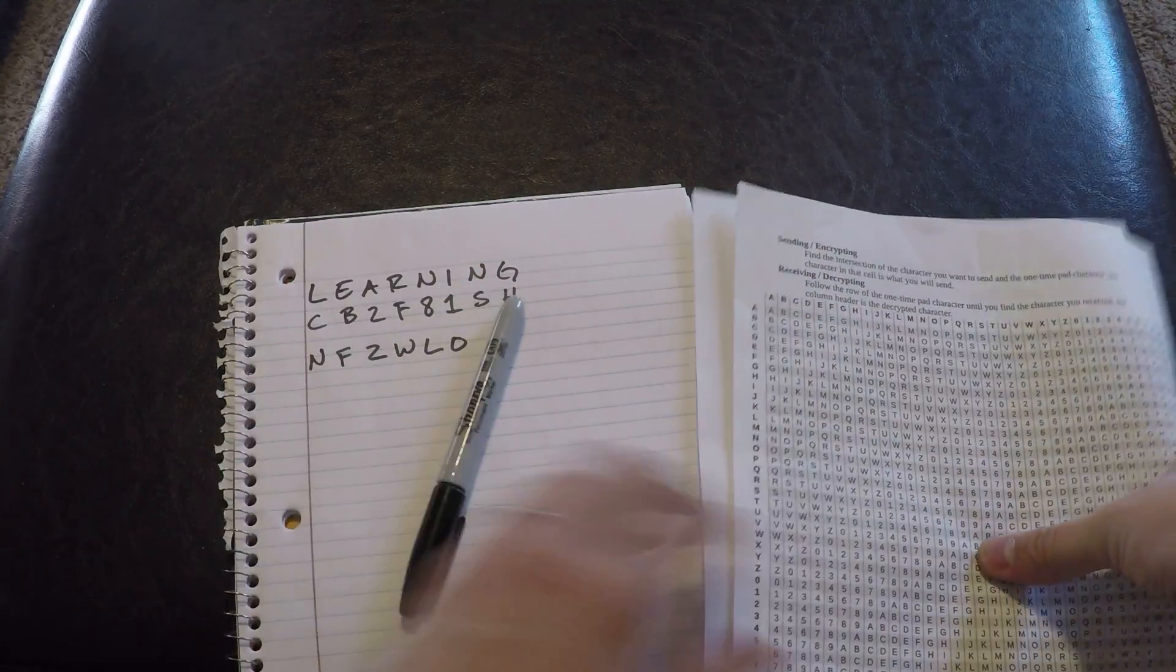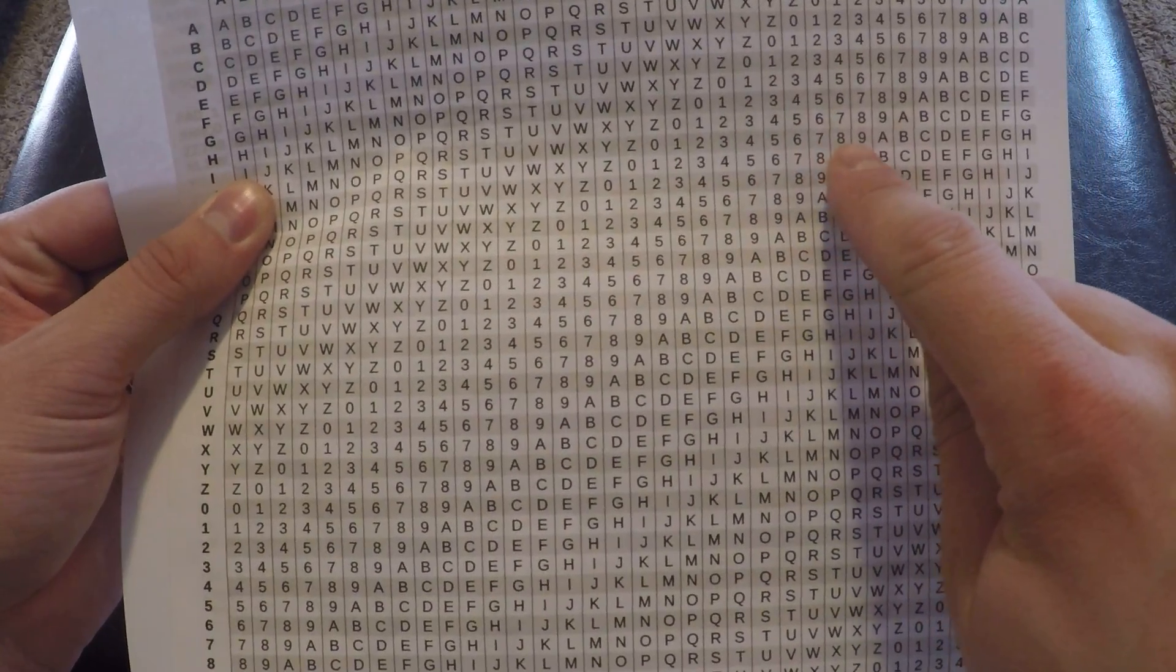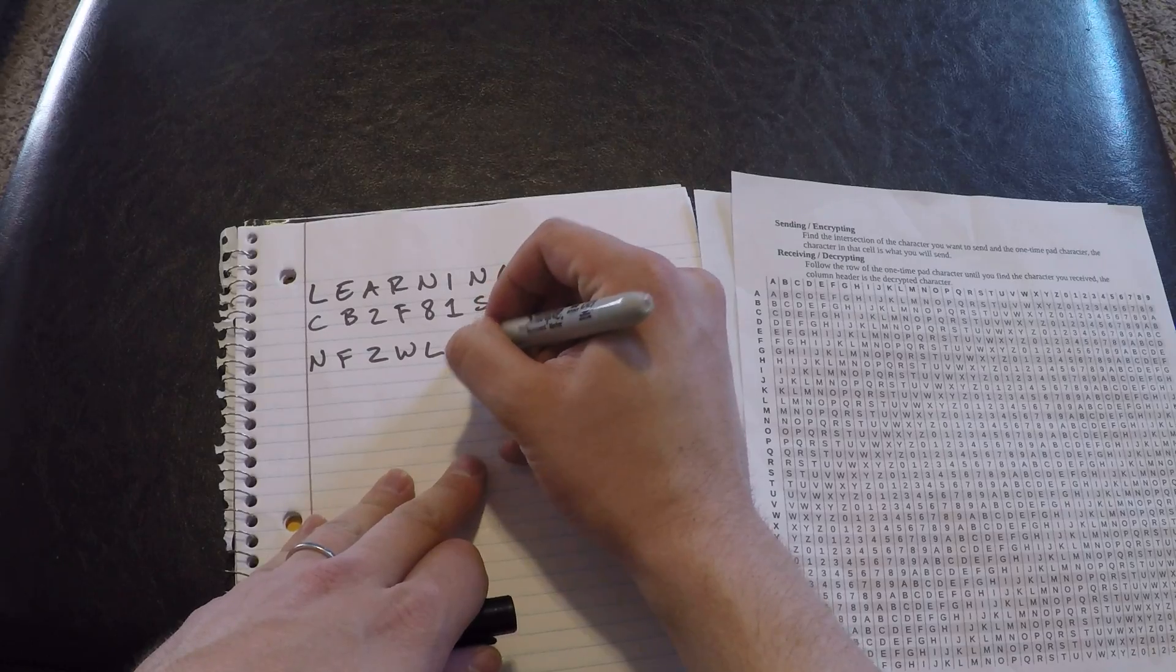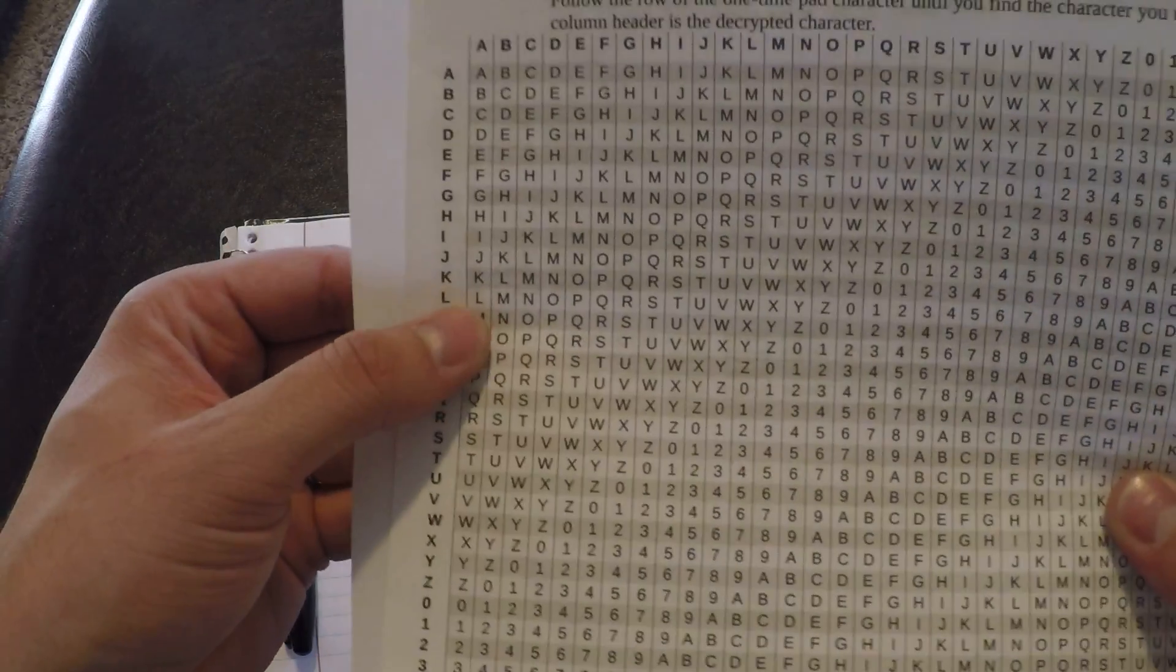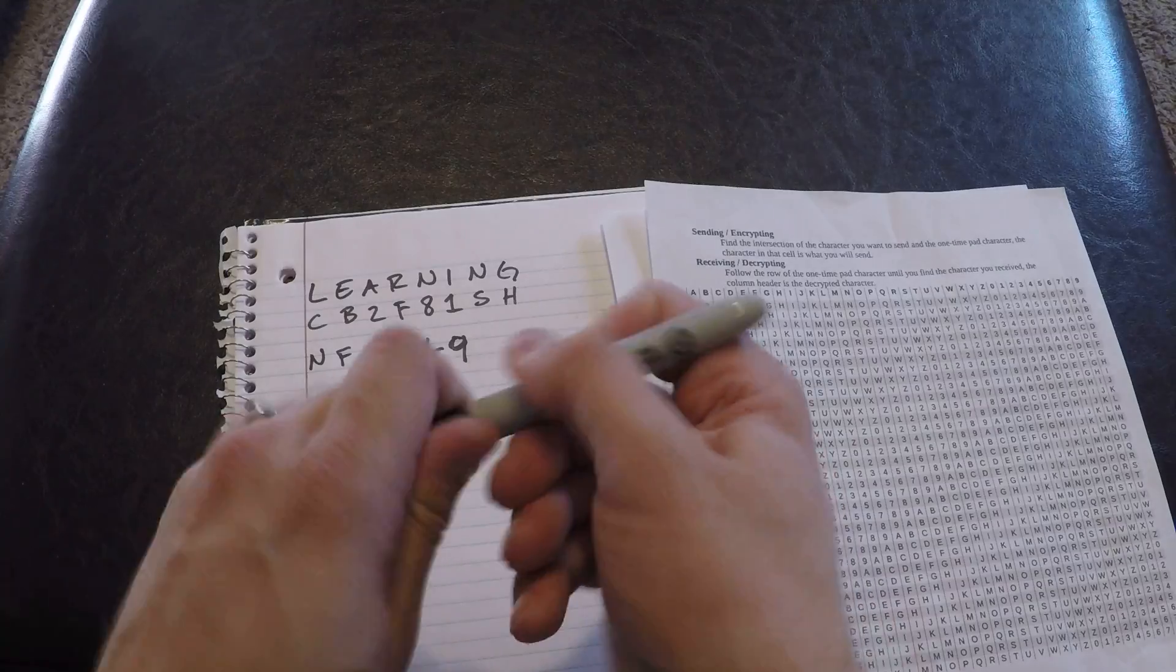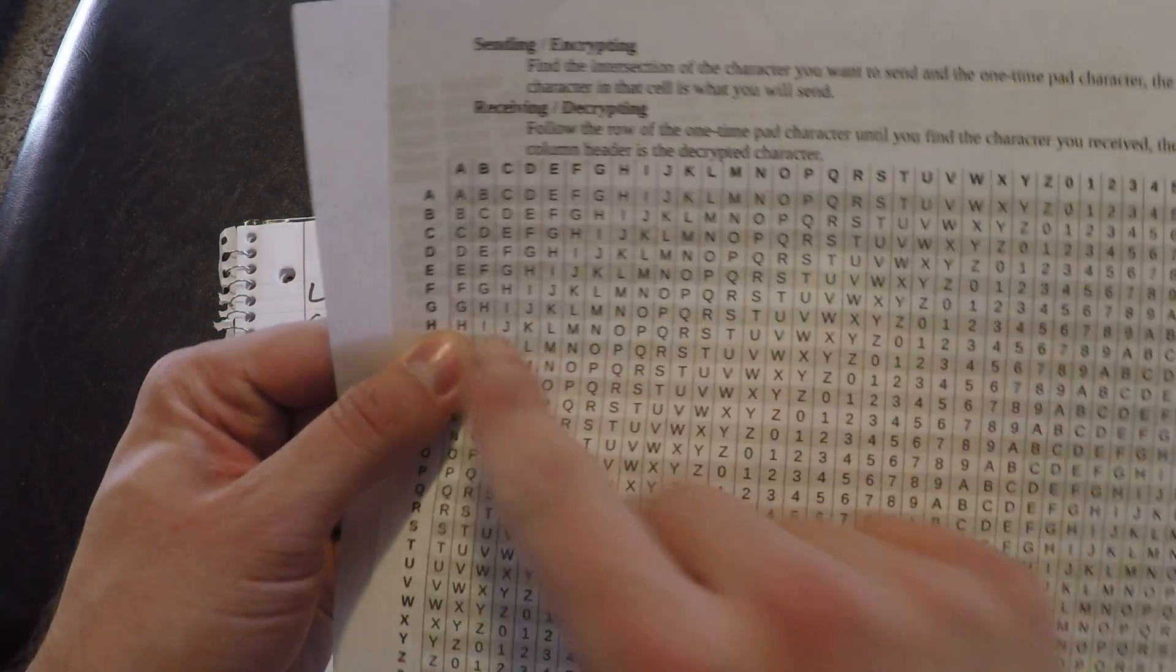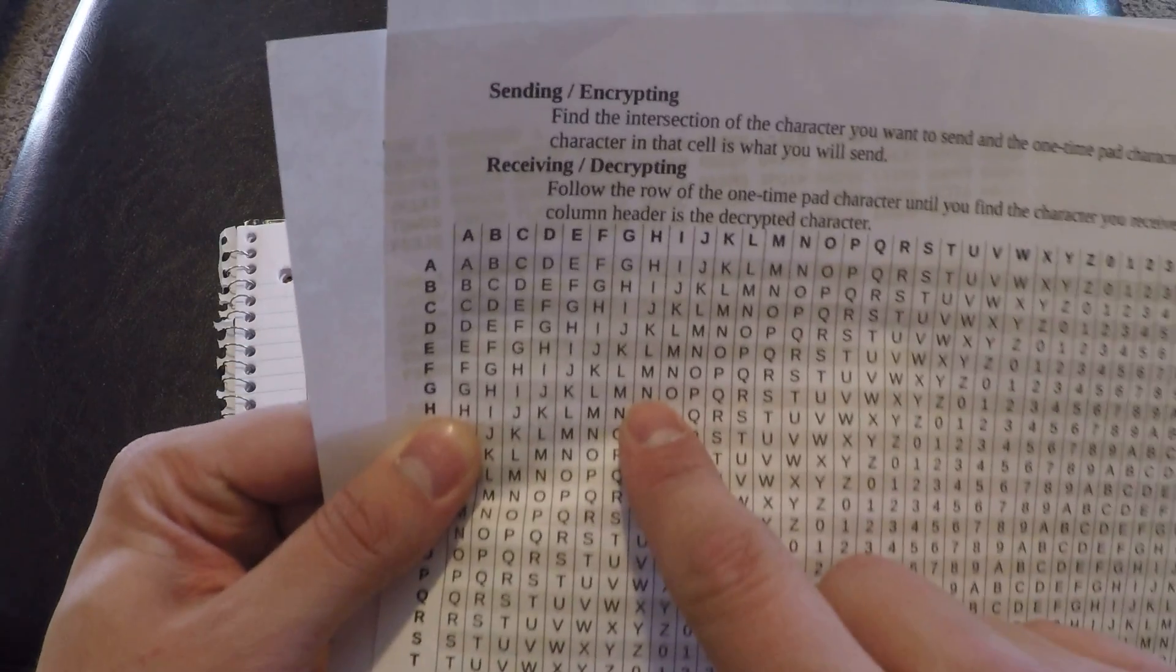I over to 1, which is 9. Sorry, filming and doing this at the same time can be a little confusing. N and S. N over to S, which is 5. And G and H over to H, which is N.